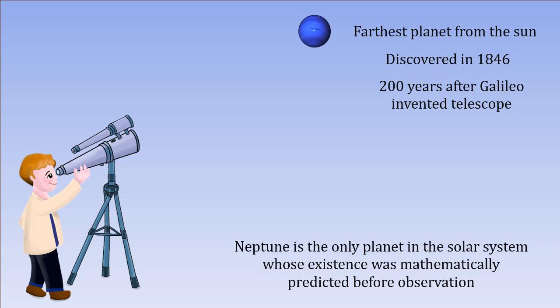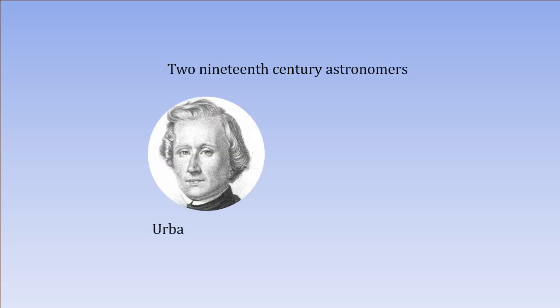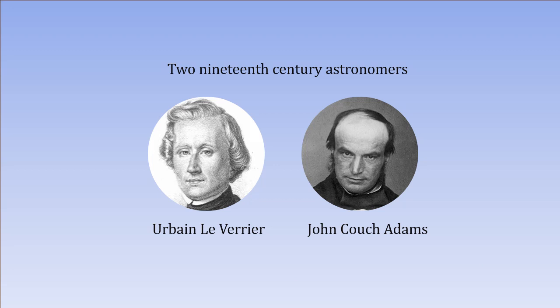The credit of the discovery of Neptune goes to two 19th-century astronomers: Frenchman Urbain Le Verrier and Englishman John Adams.